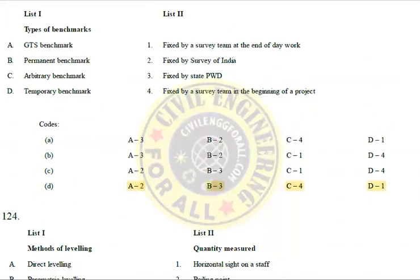GTS benchmark is fixed by the Survey of India. There are three types of benchmarks: the permanent benchmark, the arbitrary benchmark used at the beginning of a project for working surveys, and the temporary benchmark, which is conveniently fixed as needed.